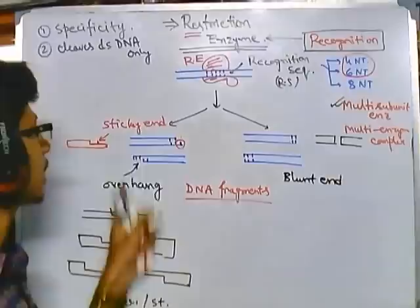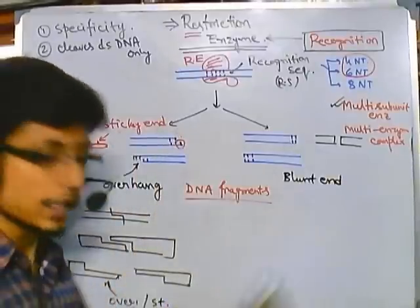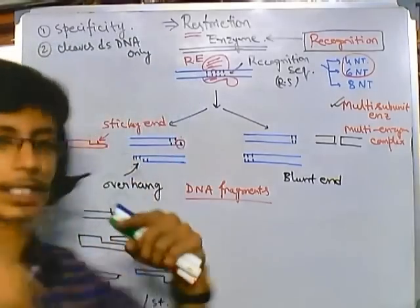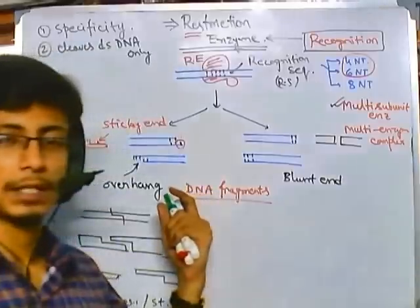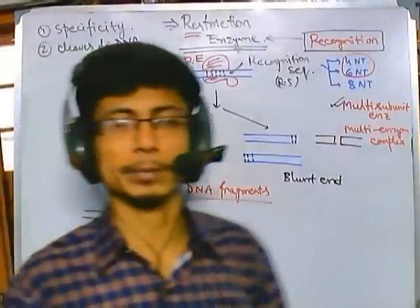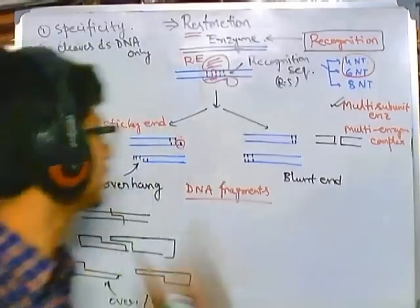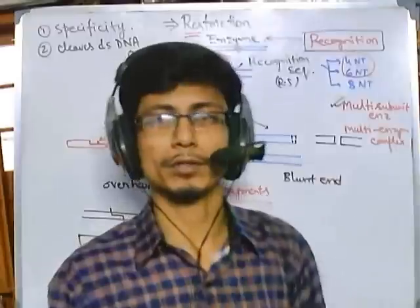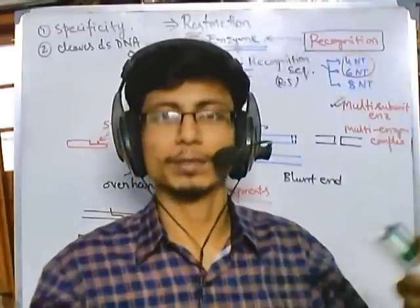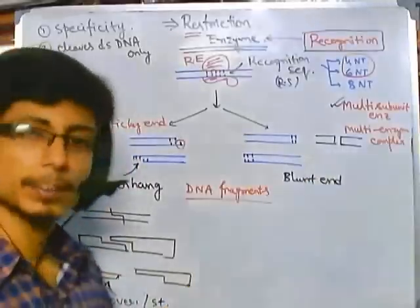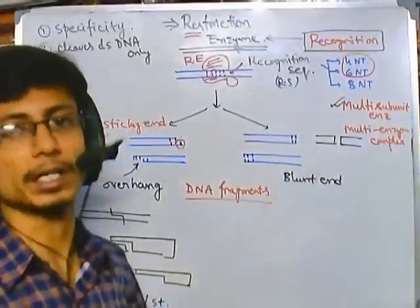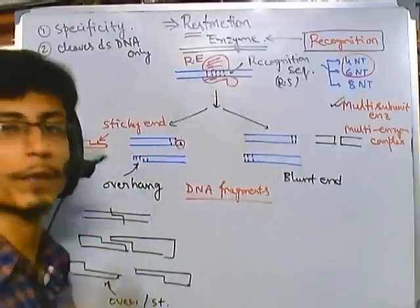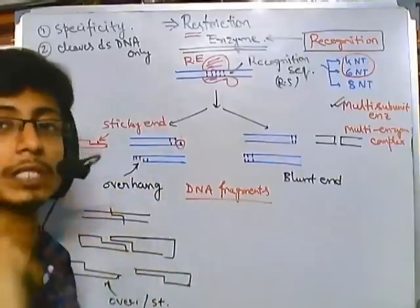So either we can generate a sticky end or we can generate a blunt end. Now if you generate sticky end, which one is better for our ligation? Ligation means joining the nucleotide sequences. The answer is obviously sticky end, because as it is popping one nucleotide out, so it can easily combine with other nucleotide and can form bond. But for this blunt end, you can also join blunt end but it is a little bit more difficult to join. So these are the two types of fragments that can be generated after the restriction site cleavage or restriction endonuclease cleavage.